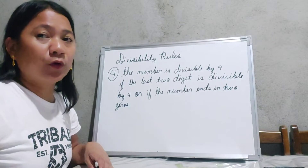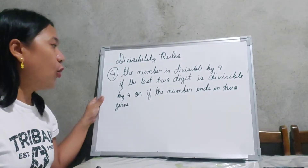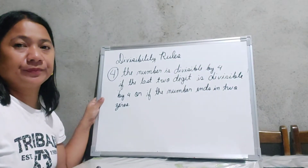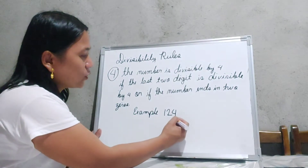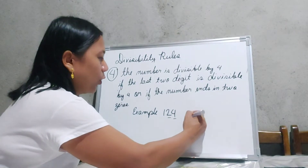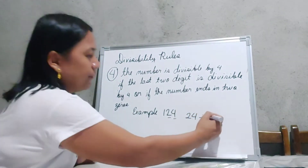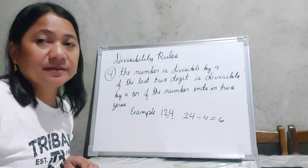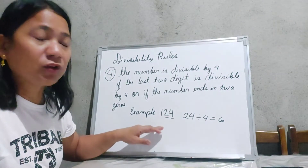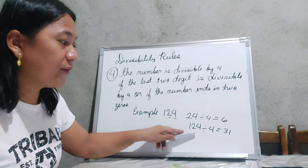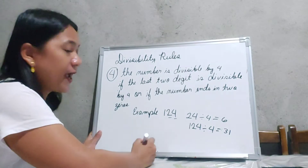This is the divisibility rule for 4. A number is divisible by 4 if the last 2 digits are divisible by 4, or if the number ends in 2 zeros. Let us use 124 as our example. Take a look at the last 2 digits — 2 and 4, which form 24. Since 24 divided by 4 equals 6, 124 is divisible by 4. When we divide 124 by 4, the answer is 31. Therefore, 4 and 31 are the factors of 124.